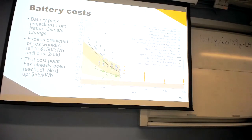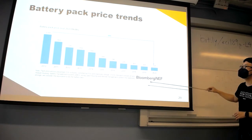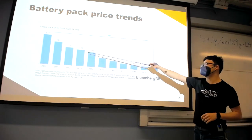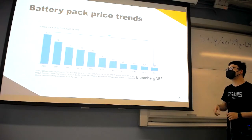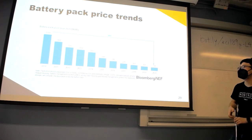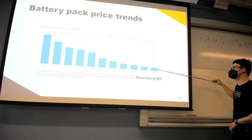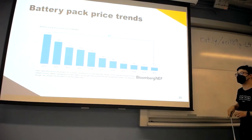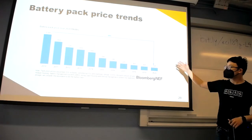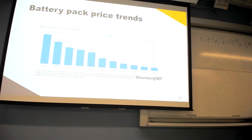The price trajectory since 2010 shows a clear downward trend. We're now in 2022, and most experts agree we've fallen well below the $150 per kilowatt hour target.